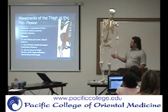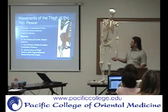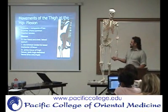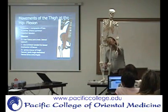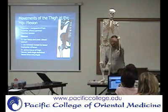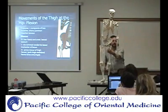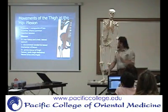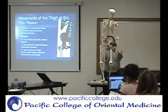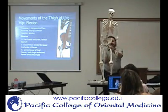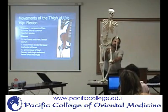Here are the details of the iliopsoas. This part is the psoas, and this is the iliacus. The iliacus is going to come off the iliac fossa, the crest, and the lateral part of the sacrum — so it starts out with a wide origin, then narrows down and inserts. When it flexes like this, it's also going to externally rotate, because it's pulling the lesser trochanter towards the origin.